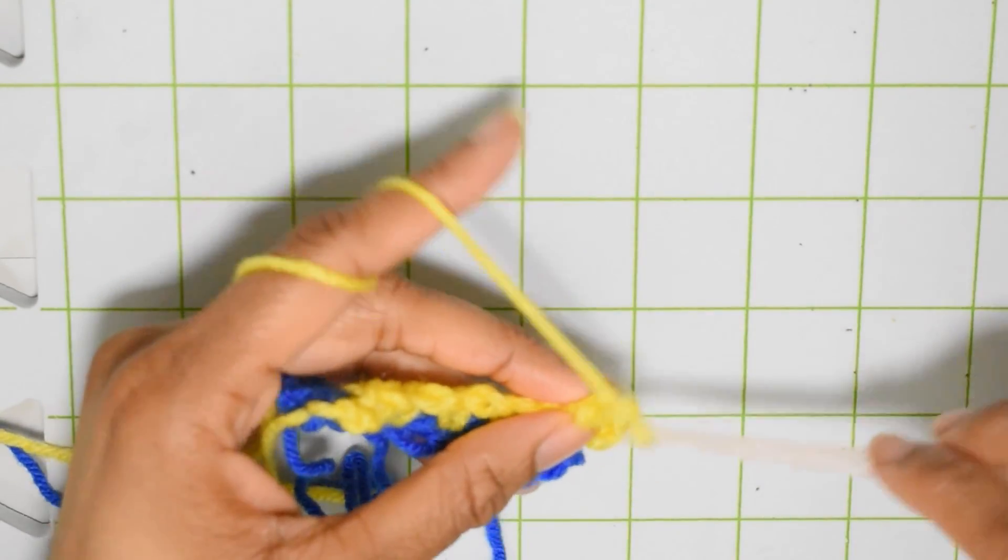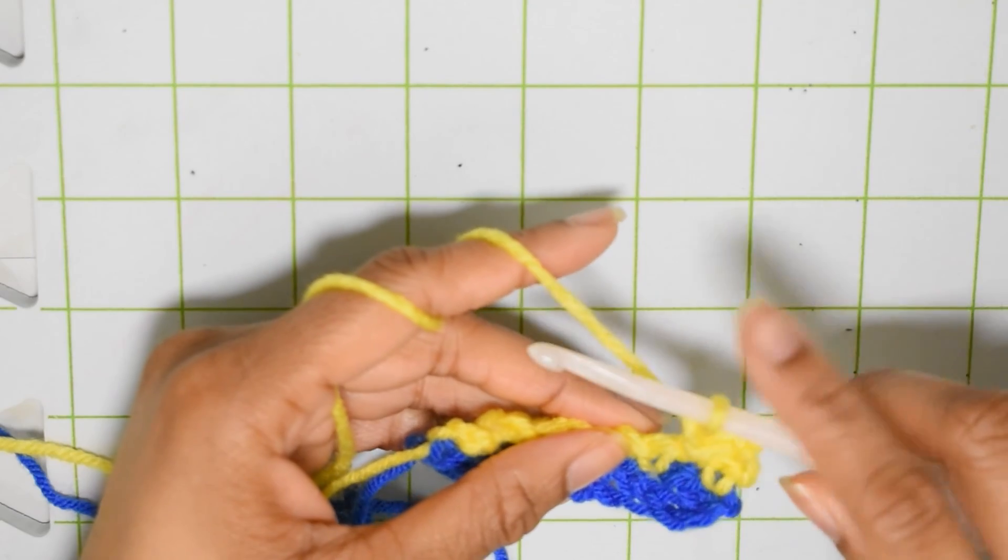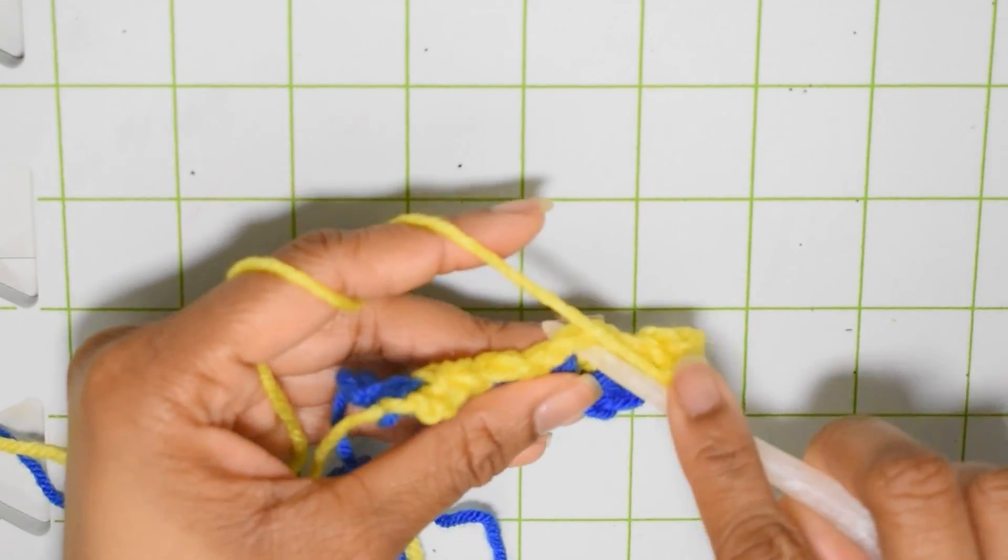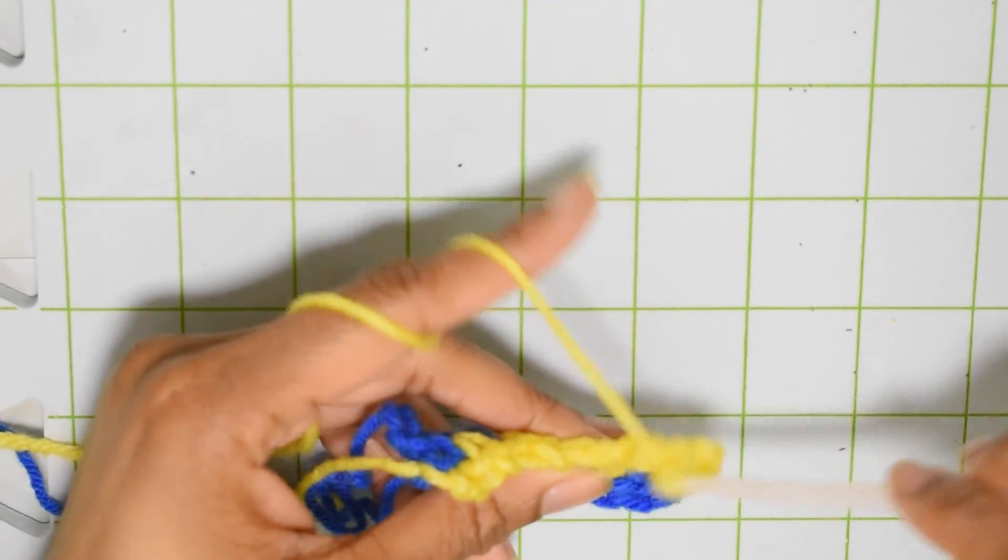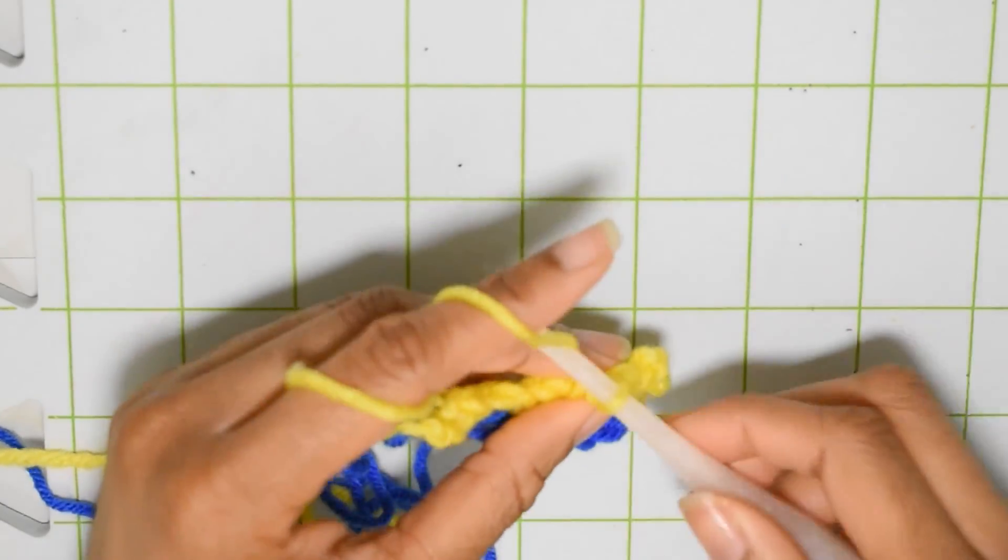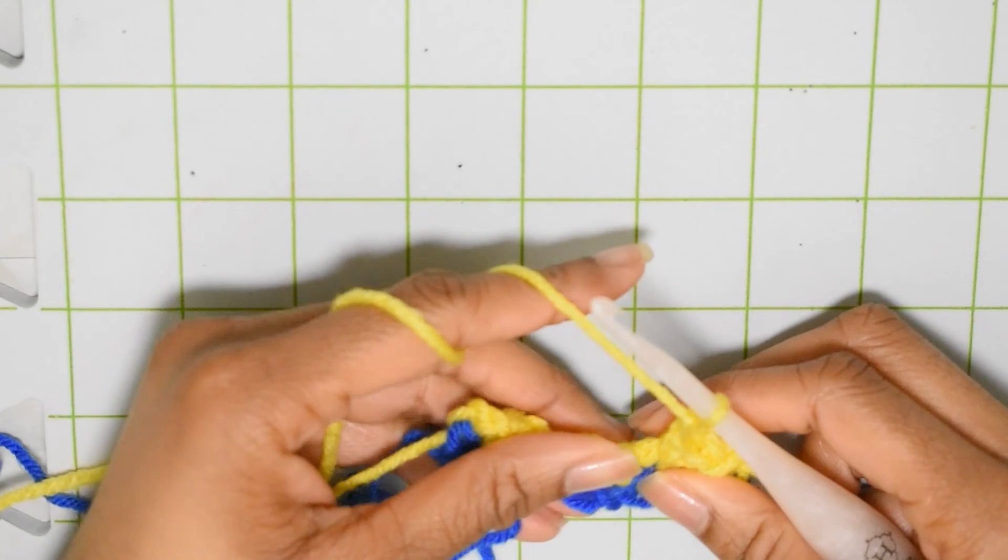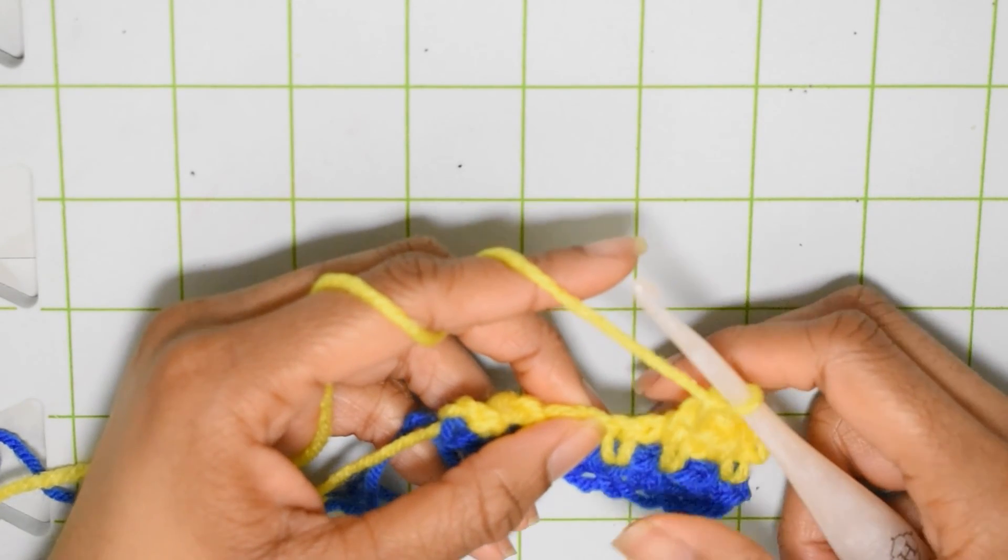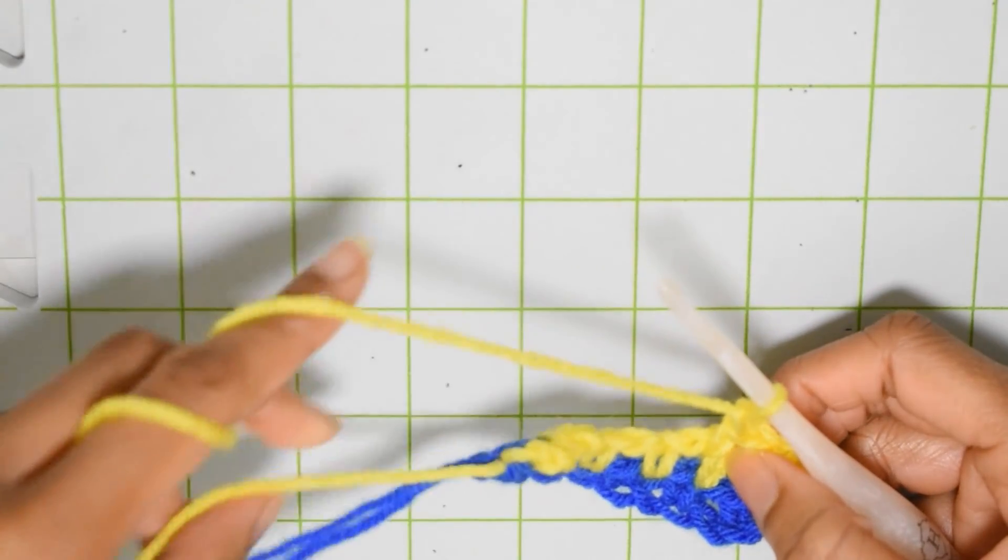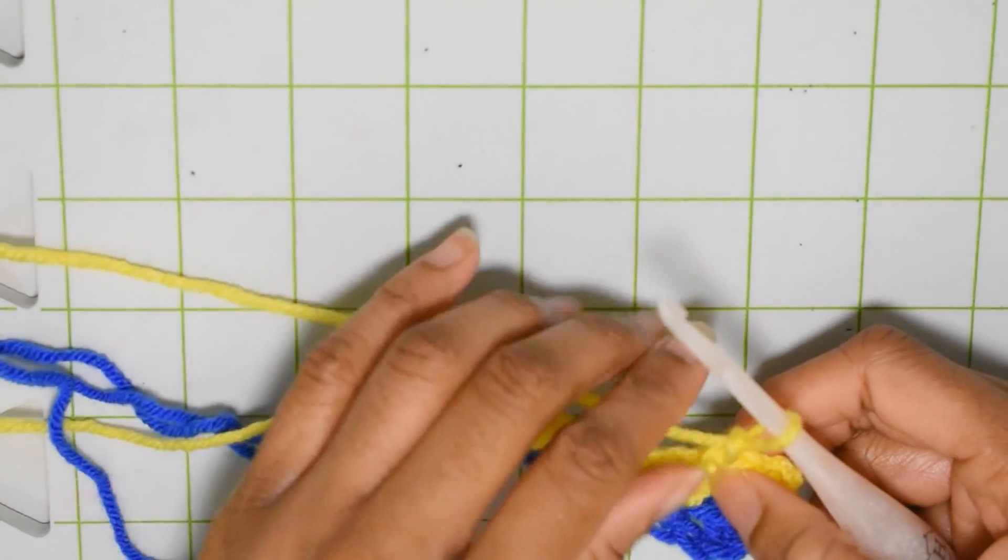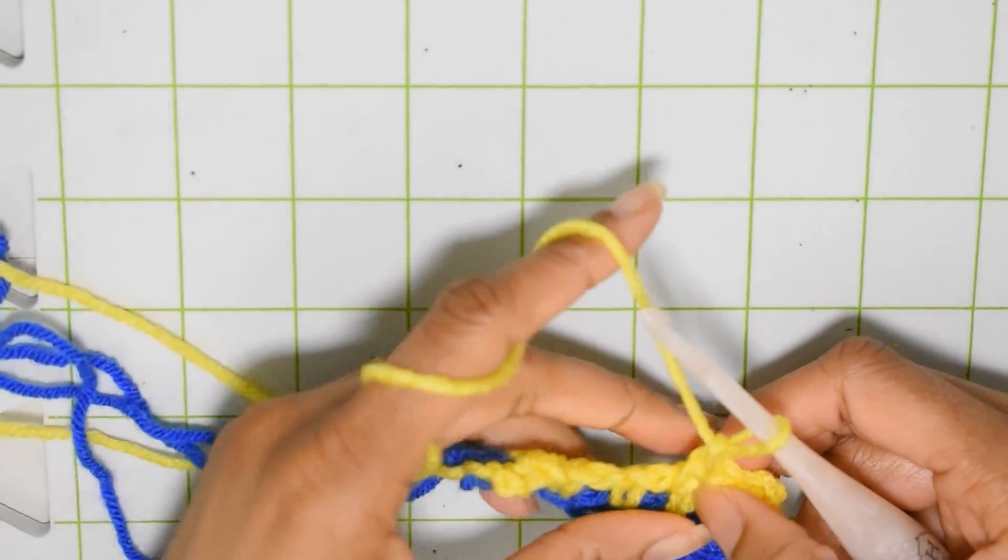Chain one, single crochet into the next chain space. It's also up to you to change your color every single row with this stitch. I like to work two rows and then change color so my strings are all on one side. That makes things nice and uniform, at least for me.